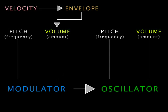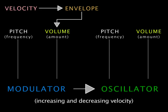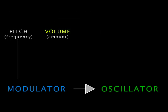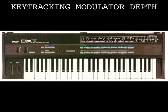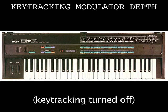Velocity-driven envelopes allow dynamic control over those changes. The pitch and volume of the modulator can be tracked to the keyboard as well. Tracking the depth of the modulator is similar to key tracking filter cutoff, allowing sounds to become brighter or darker as you move up and down the key range.